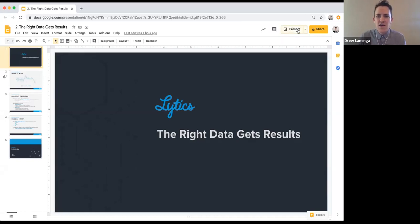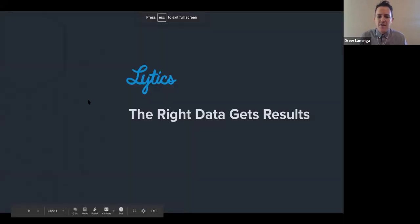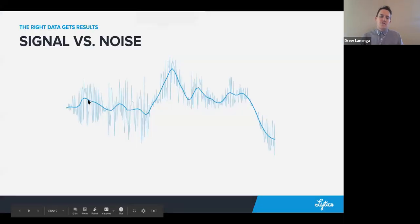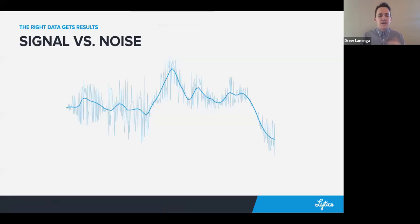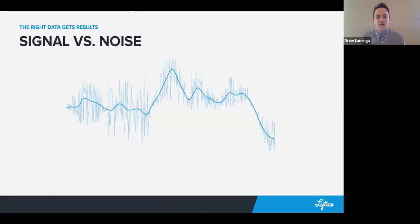We're going to start talking about data in the context of signal and noise. When you're talking to data practitioners, a lot of times you'll discuss the signal-to-noise ratio — how much signal is in the data you're working with, what that signal is, how we can extract it, and why it's important that we focus on having signal in our data.